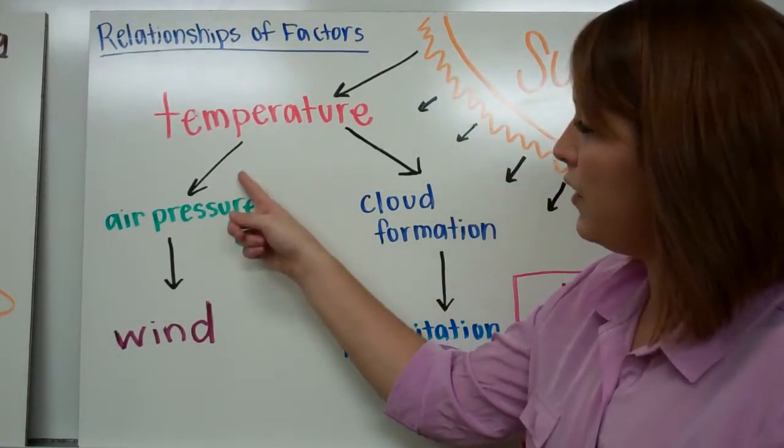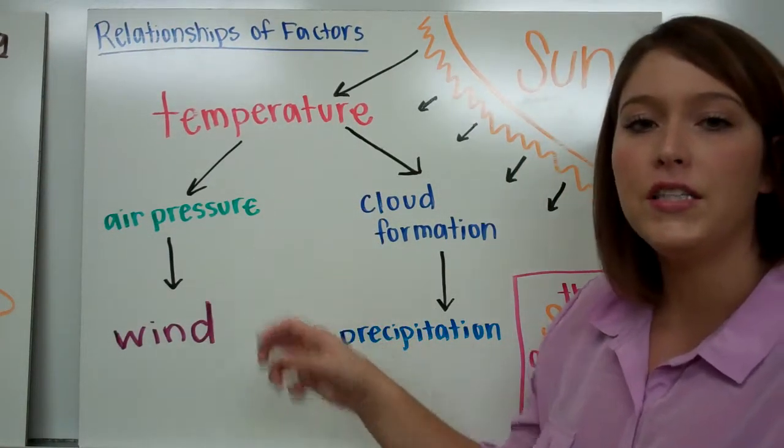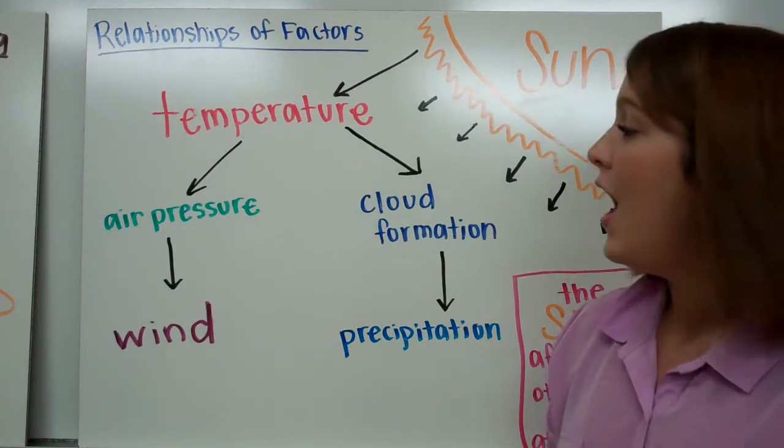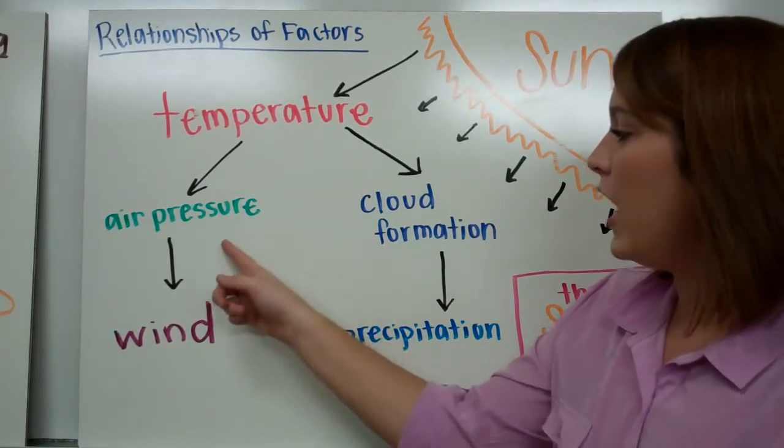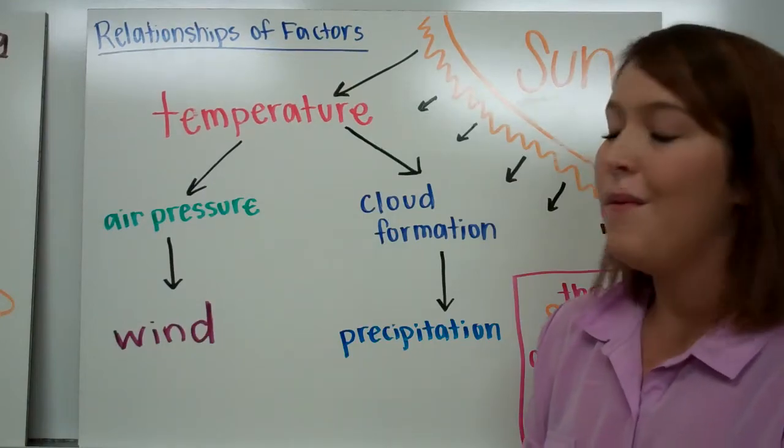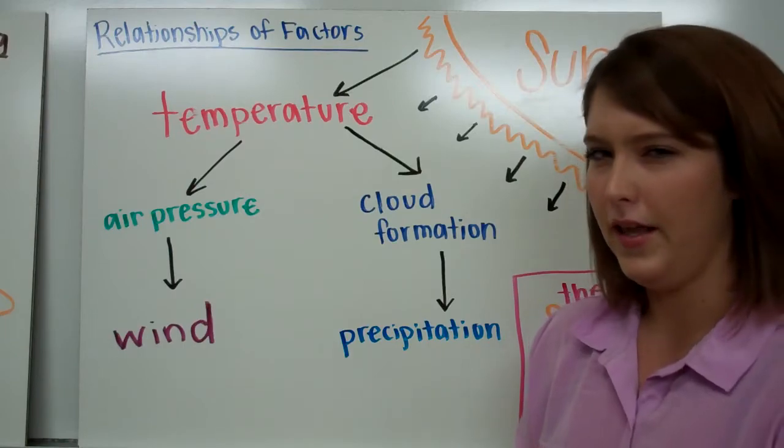Temperature is directly related to air pressure and cloud formation. Higher temperatures increase the movement of particles in the air and makes the air rise, increasing the air pressure. Air pressure is directly related to wind because areas of high pressure push towards areas of low pressure, which is when we feel a breeze in the air.